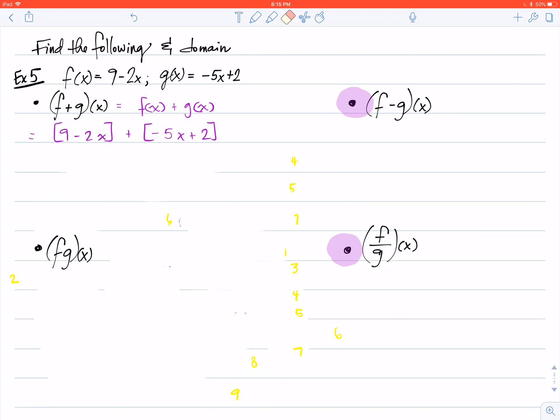That means I can use the 9 and the positive 2. I can also use the negative 2x adding the negative 5x. Combine my like terms and that's going to give me 11 minus 7x. I personally like to rewrite that so my constant is last, so I would rewrite that as negative 7x plus 11.